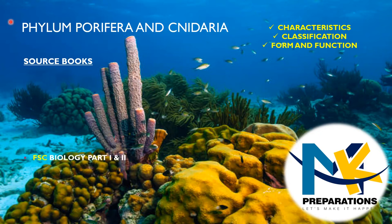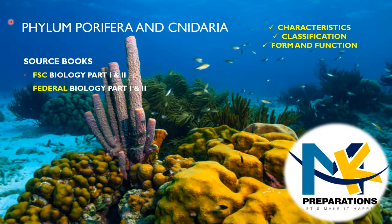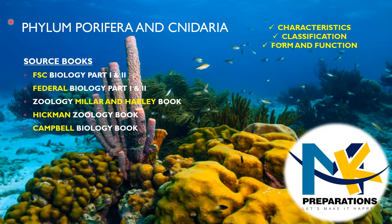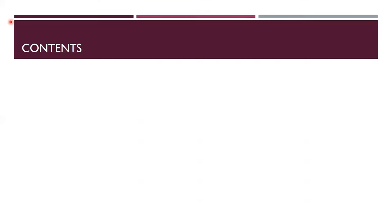The material in these slides is taken from various source books including FSC Biology Part 1 and Part 2, Federal Biology Part 1 and Part 2, Zoology by Miller and Harley, Hickman Zoology, Campbell Biology, and Rawan Biology. The topics we will cover include origin of multicellularity, phylum Porifera, and phylum Cnidaria.